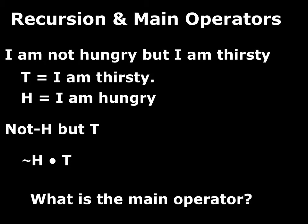There are two operators here, not just one. If you go back to the previous video, everything we translated only had one operator — either a tilde or a dot. Here we have two operators, and it's important to be aware, any time you're looking at a statement in formal notation, what is the main operator? The main operator is the operator that put the two biggest pieces together — it was the last operator used to make the biggest thing. Here the last operator was the conjunction. This conjunction put together the compound statement 'not H' with the atomic statement T to come up with 'not H and T.'